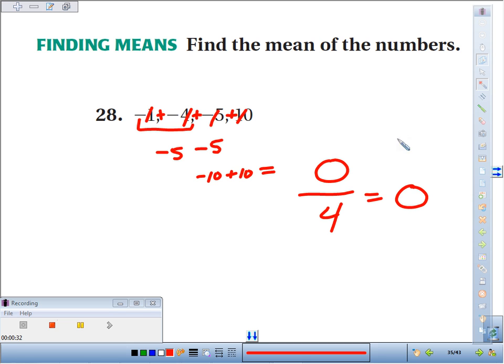So the mean of these numbers, when I added them up, the sum was 0, divide by how many terms there are, 4, 0 divided by 4, gives me a mean of 0.